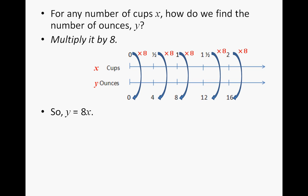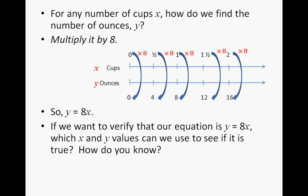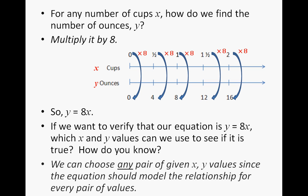Our equation: if I want to know what Y is, I am going to multiply 8 times X. To verify that Y equals 8X is true, you can use any pair of X and Y values. We can use 1.5 and 12, or 2 and 16, or 0.5 and 4. When we divide Y by X, we always get 8: 8 divided by 1 is 8, 12 divided by 1.5 is 8, 16 divided by 2 is 8. Any of those pairs will divide to make 8.